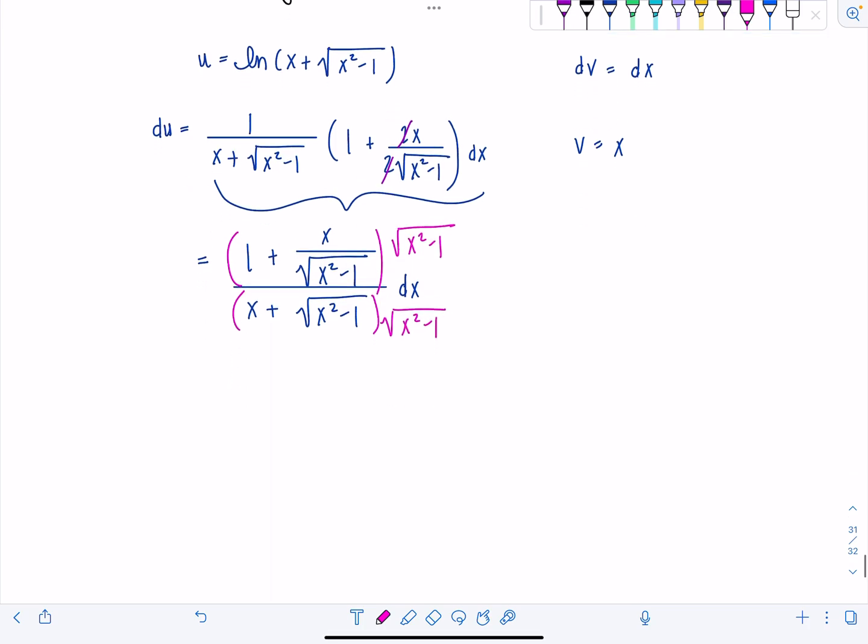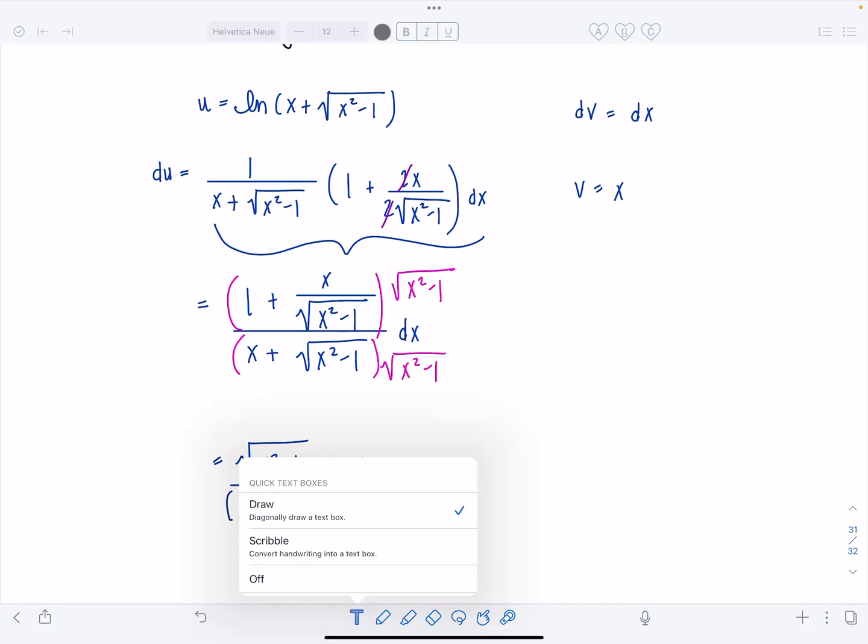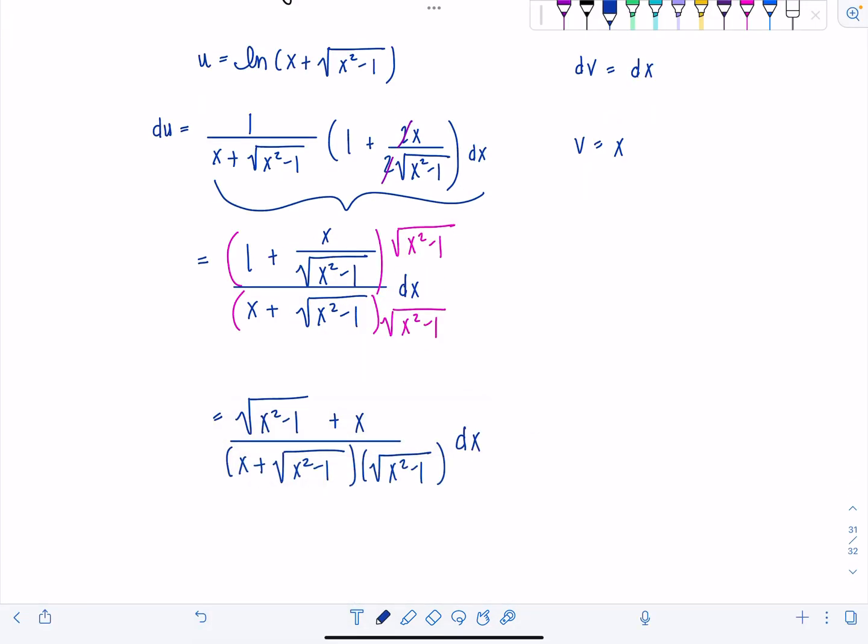And it's a complex fraction or expression. So I'm going to multiply everything by rad x squared minus 1, top and bottom. And then let's see what comes of it. So this is going to be rad x squared minus 1 plus x in the numerator when I distribute this through. And then in the denominator, I'm actually just going to leave it factored. So x plus rad x squared minus 1 times rad x squared minus 1 dx. And then perhaps you notice something now.